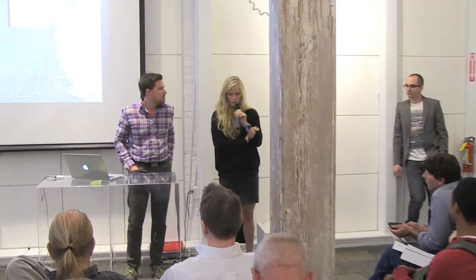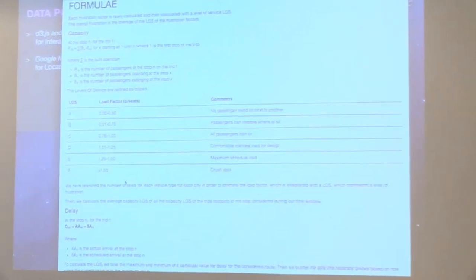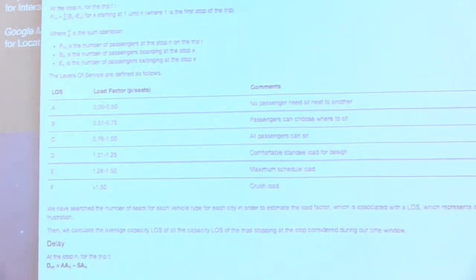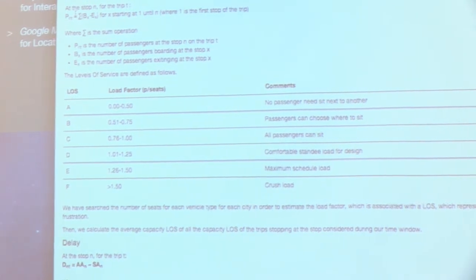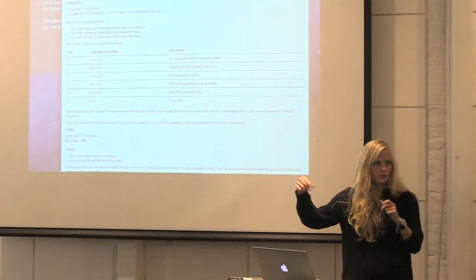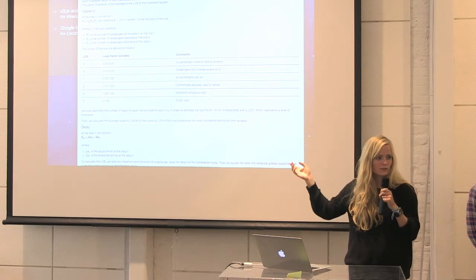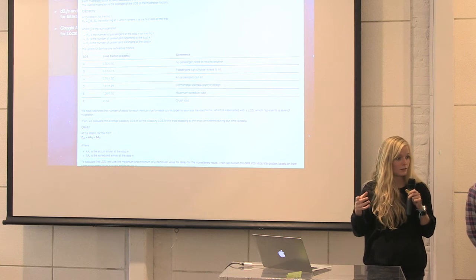To answer the first question: for now you can't tune it yourself, but that was the idea of the mobile app — you can weight different frustration factors according to your preferences. For the capacity question, it's directly coming from a level of service chart. We computed each factor: the load, the capacity, the number of people in the bus. We then used a real level of service chart from the Transportation Research Board, which is what traffic engineers use to assess the capacity of a vehicle.